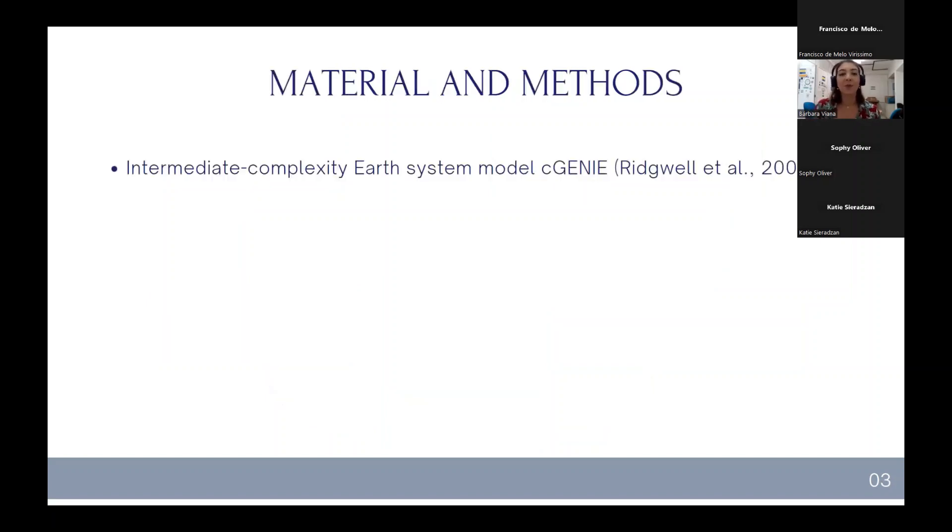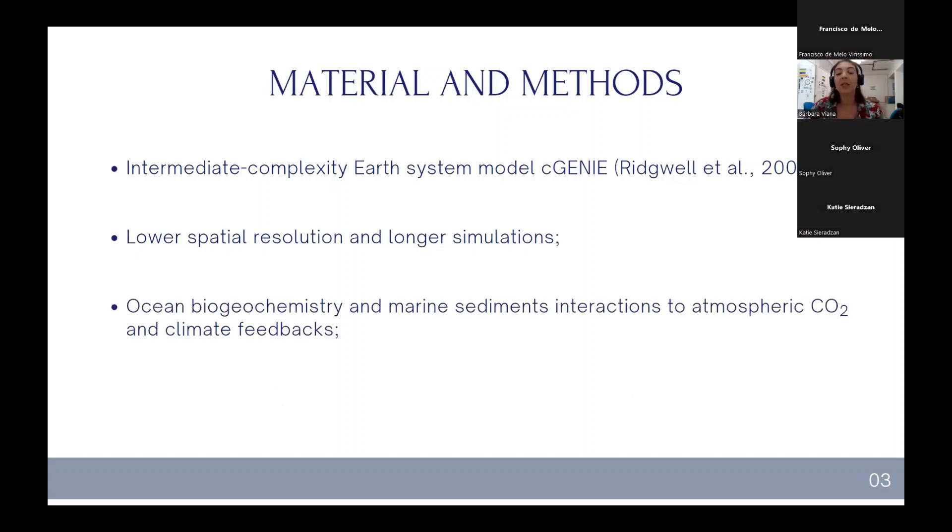To accomplish our goals, here we use the cGENIE model, which is an intermediate complexity Earth system model designed to allow long-term simulations from 100 to 100,000 years with lower spatial resolution, and to understand fundamental features of the ocean biogeochemistry and marine sediments interactions to atmospheric CO2 and climate feedback.